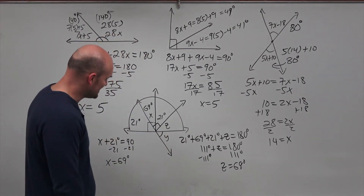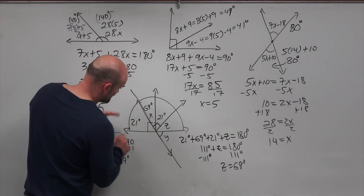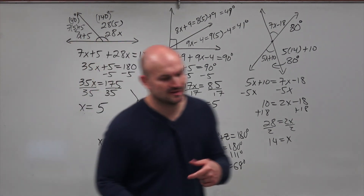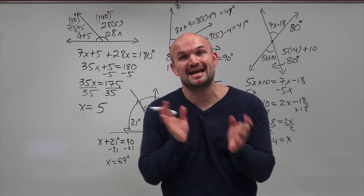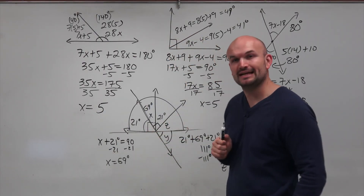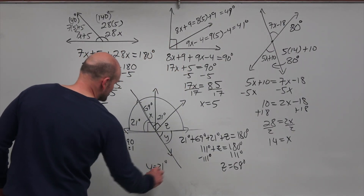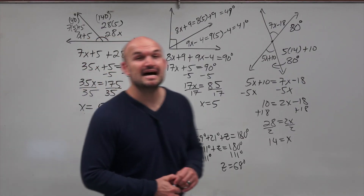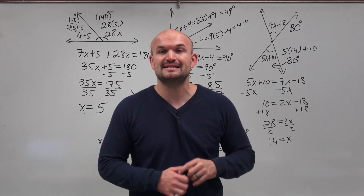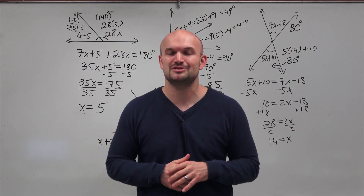The last relationship: the two intersecting lines create vertical angles. If this angle is 21 degrees, then its vertical angle also has to be 21 degrees, so y = 21 degrees. That is how we use complementary, supplementary, and vertical angles to find the missing measures of an angle.